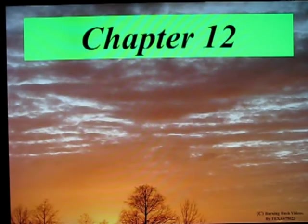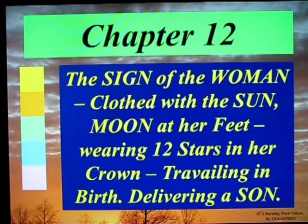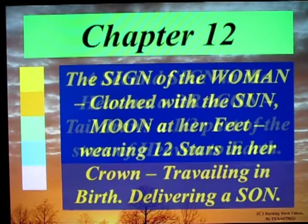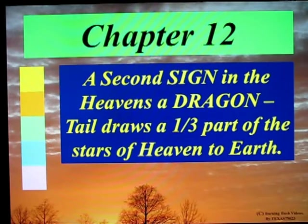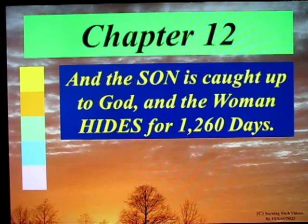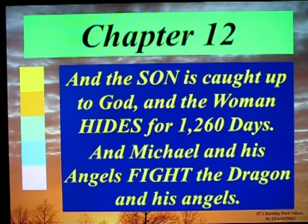In Chapter 12, the sign of the woman clothed with the sun, moon at her feet, wearing twelve stars in her crown, travailing in birth, delivering a son. And a second sign in the heavens: a dragon whose tail draws a third part of the stars of heaven to earth. And the son is caught up to God, and the woman hides for 1,260 days. And Michael and his angels fight the dragon and his angels.